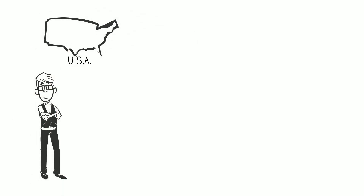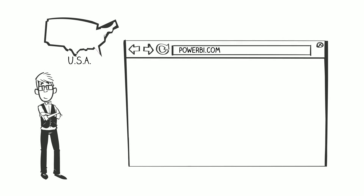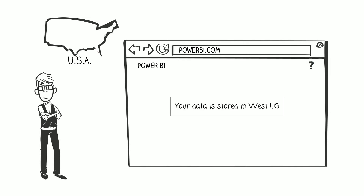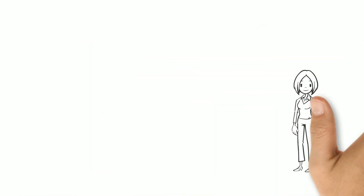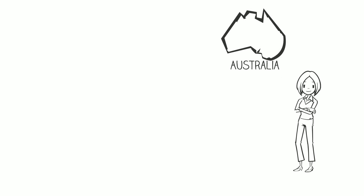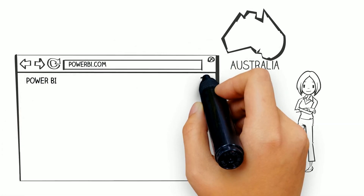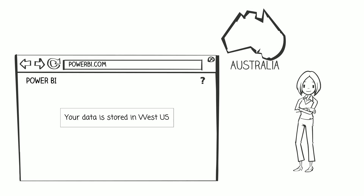Let me give you a quick scenario. Say that I've got John, and John is located in the United States, and he signs up for Power BI, and he's the first user for that organization to sign up for Power BI. When he goes into the Power BI service, he'll then see that his data is stored in the United States, in one of the United States regions. So then we've got Jane. This is a global organization, and Jane resides in Australia. She then goes and signs up for Power BI, but her data region she's going to see is United States also.